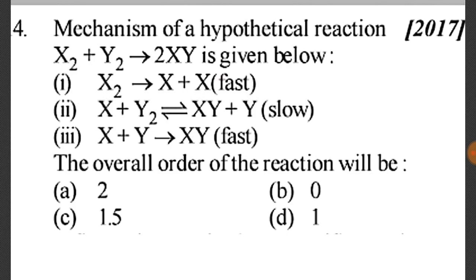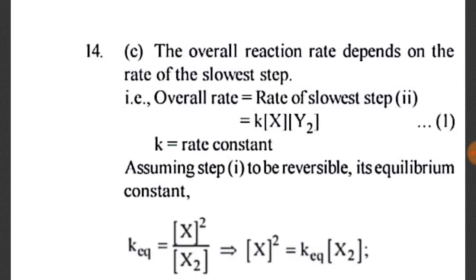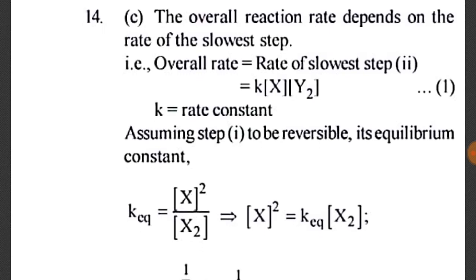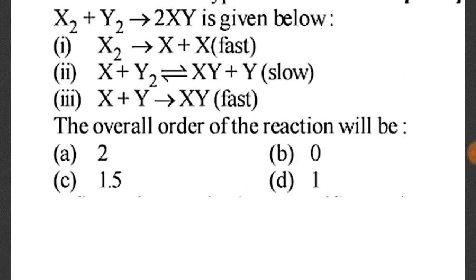You will know that when we have the rate of reaction, we will not take the fast reaction but the slow reaction. The overall reaction rate depends on the rate of the slowest step. We take the slowest step: rate = k[X][Y₂].